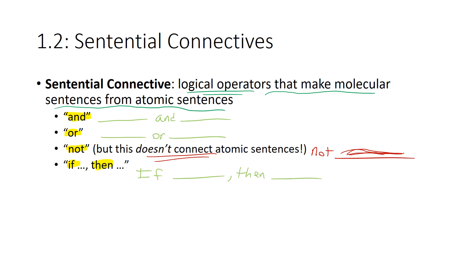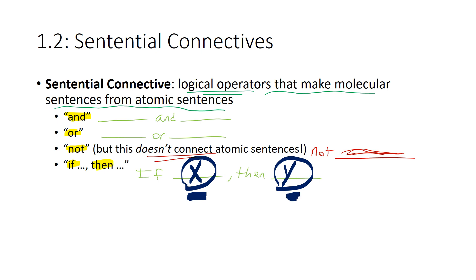There's a lot more to be said for these sentential connectives, and we'll do that as we go on. The most confusing of the sentential connectives is actually the IF-THEN — the conditional. For example, if X is the case, then Y is the case. X we call the antecedent and Y we call the consequent. The most important thing to understand about conditionals is the distinction between sufficient and necessary conditions. X, the antecedent, is sufficient for Y, the consequent — that is, if X is the case, then Y will be the case. But X is not necessary for Y; other things might bring about Y.